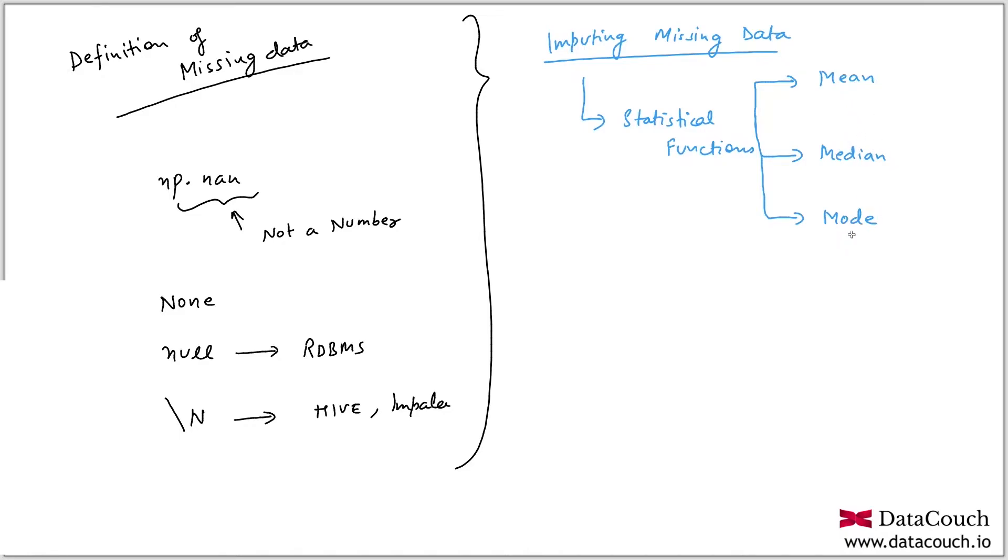Mode is the most frequently occurring value. For example, when you have gender and gender is missing, you can substitute for people who did not disclose their gender with some value. I can have mode or the most frequently occurring gender to substitute in the missing value. That can be another way of handling missing data.